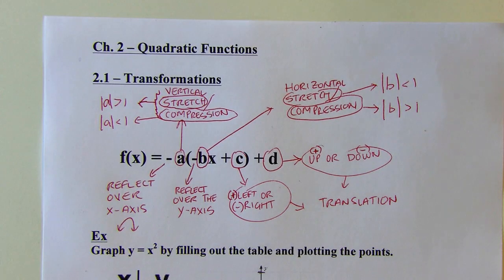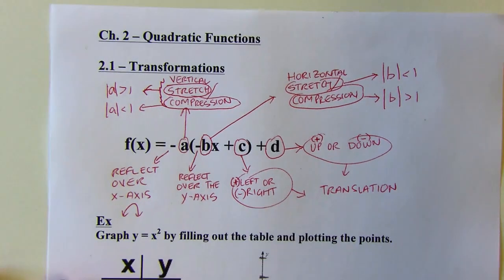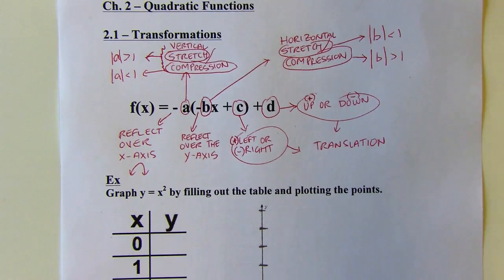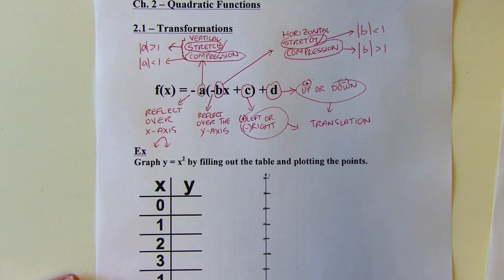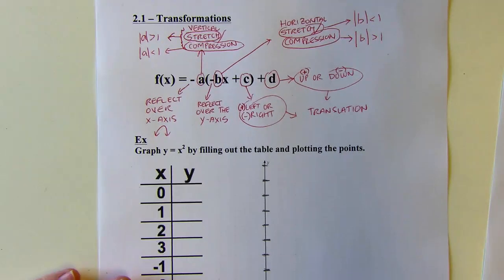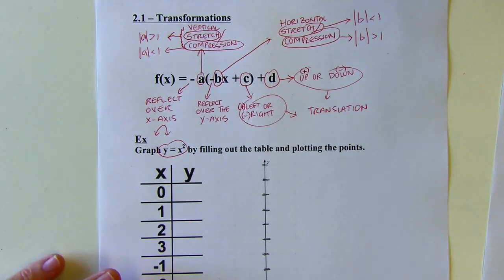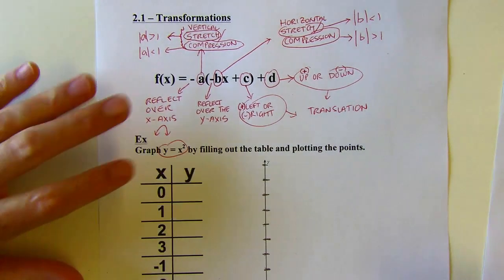There's a lot to digest there, but that's what we went over in the last chapter. We've got a new parent graph: y equals x squared. That's the simplest possible quadratic equation, and it's going to be a parabola.